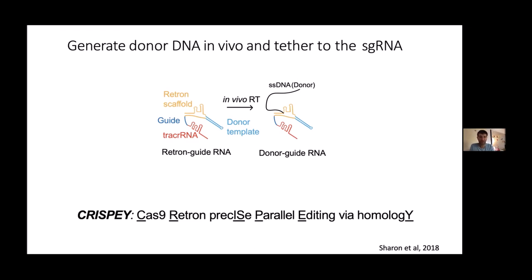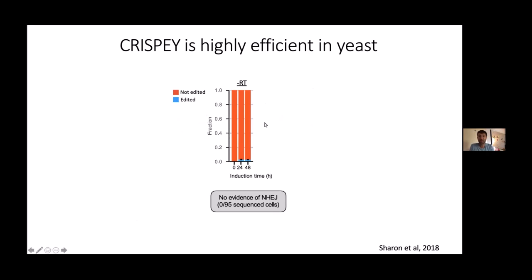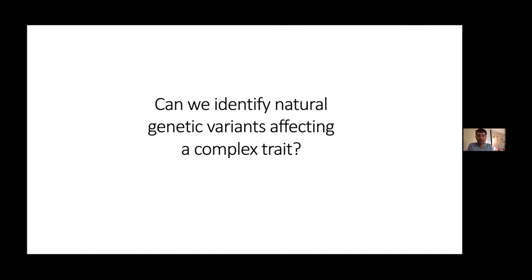We have a cute acronym for this: CRISPY, which stands for Cas9 Retron Precise Parallel Editing via Homology. Testing CRISPY in yeast, without the RT we see very low rates of editing — just a few percent of cells get the correct edit. But once we express the RT, editing goes up to nearly 100% efficiency. This is really exciting because it allows us to scale up editing to something very high throughput — we no longer have to test each cell to see whether it got the edit.